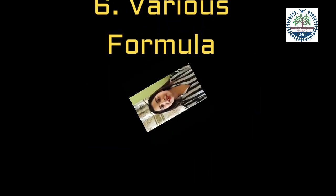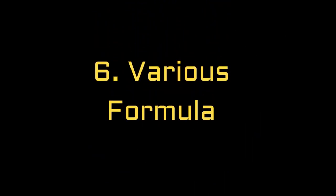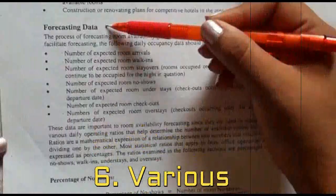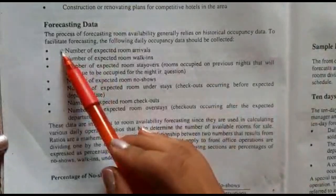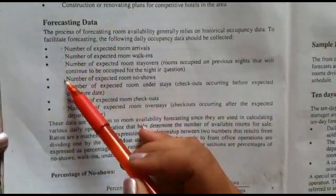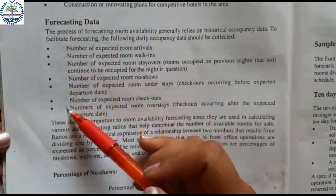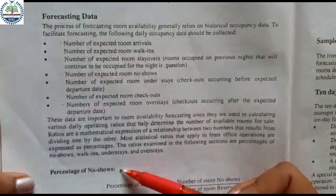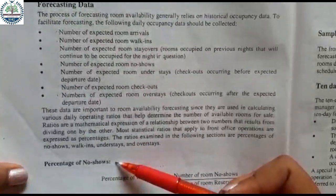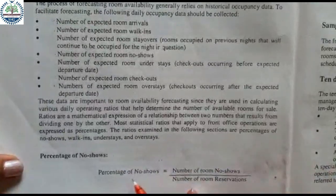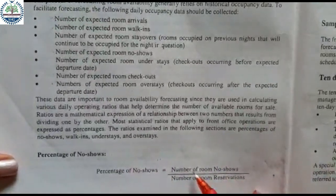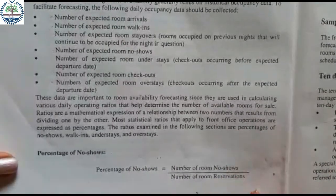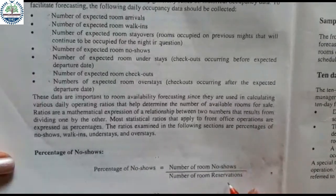With this, we finish our second unit which is forecasting room availability. Let me just tell you these are the pointers you need to take care of when understanding forecasting data. We will shift to calculating percentage of no-shows. The formula is: percentage of no-shows = number of no-show rooms divided by the number of room reservations.